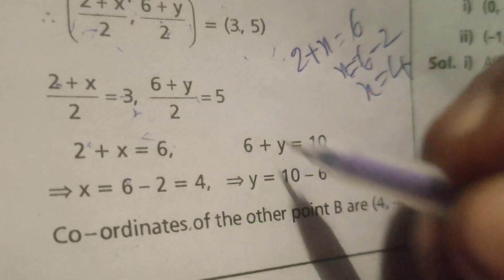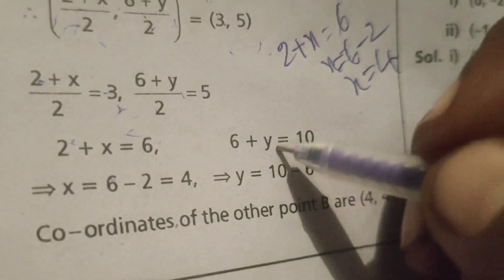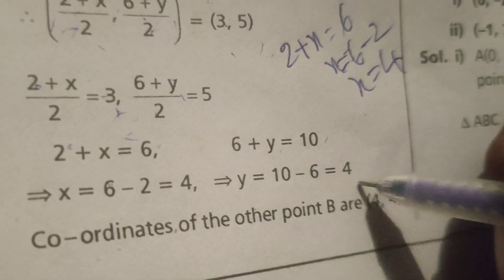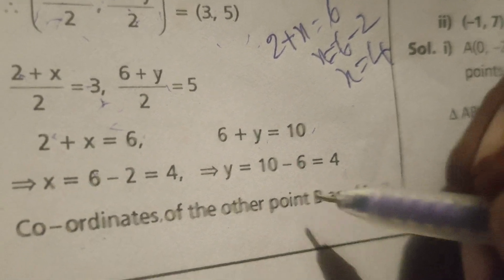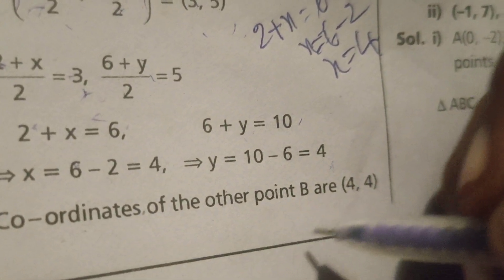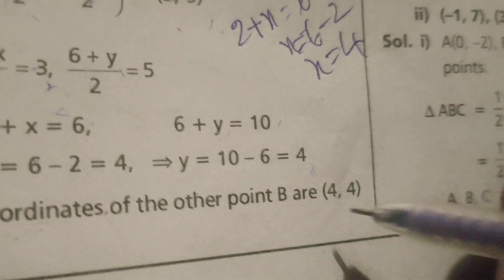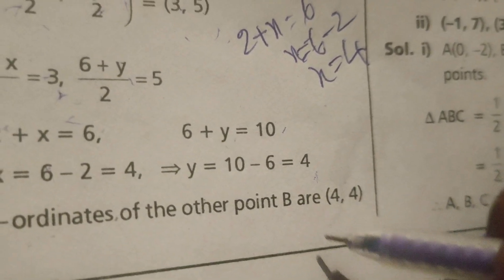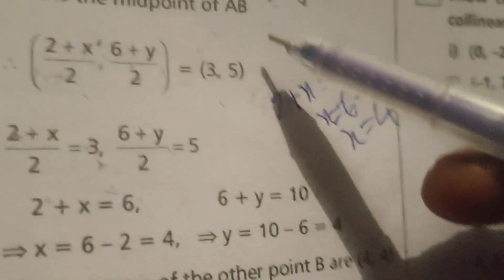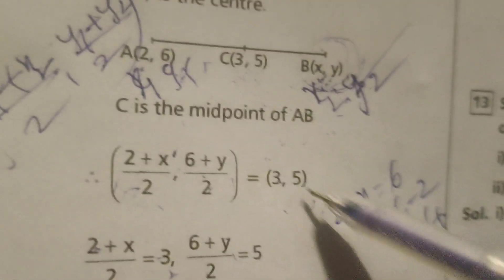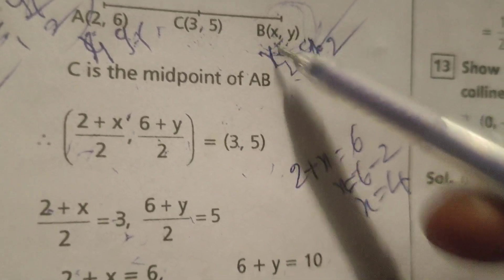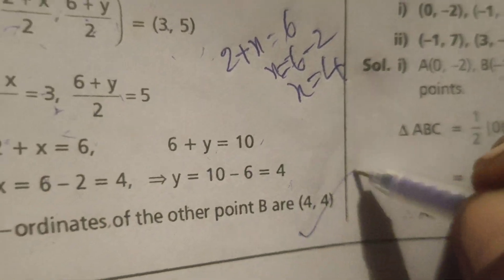Therefore, 6 + y = 10, y = 10 - 6, that is 4. Coordinates of the other point, the other extreme or other end of the diameter B, are (4,4).